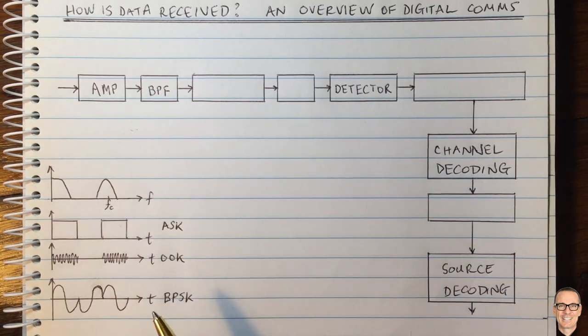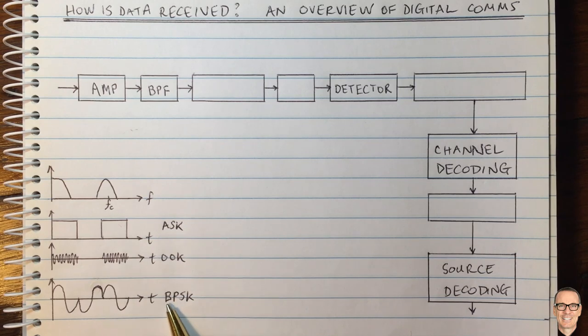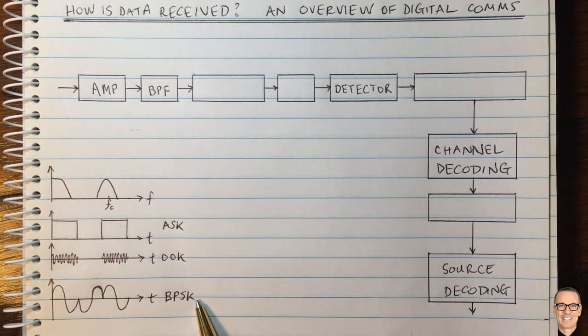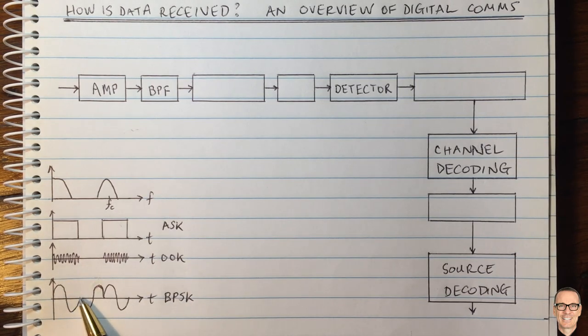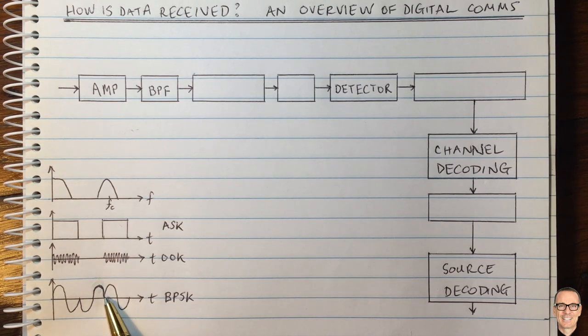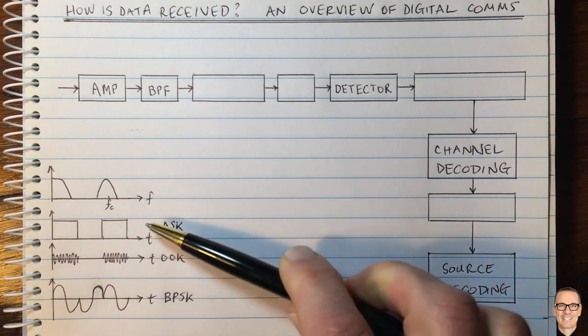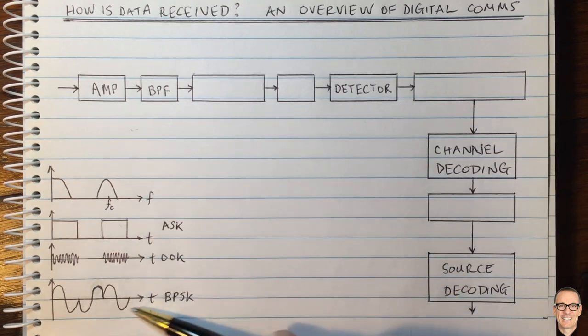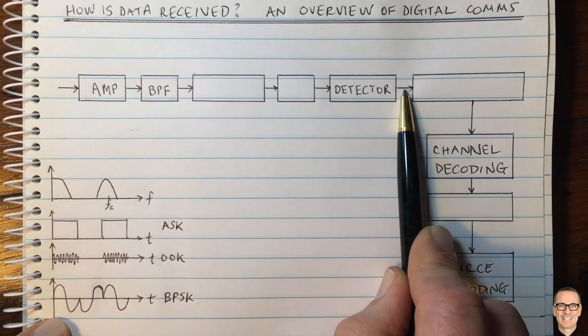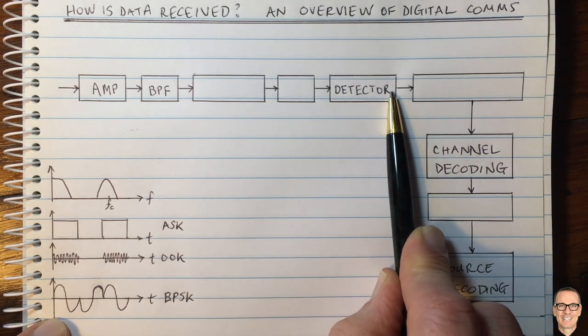If it's wireless channels, the most basic form is binary phase shift keying (BPSK), where you're sending a signal of one phase to represent a one and the opposite phase to represent a zero. Now we've got to think about how we convert these waveforms back into ones and zeros at the output of our detector.